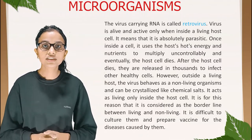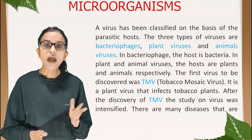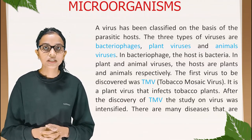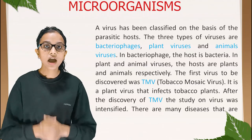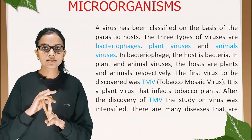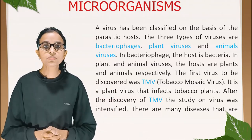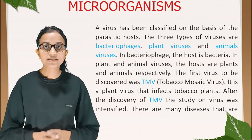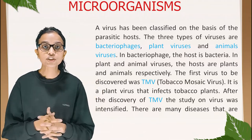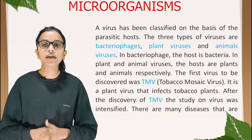It is difficult to culture viruses and prepare vaccines for diseases caused by them. Viruses have been classified on the basis of their parasitic hosts into three types: bacteriophages, plant viruses, and animal viruses. In bacteriophage, the host is bacteria; in plant and animal viruses, the hosts are plants and animals respectively. The first virus to be discovered was TMV — tobacco mosaic virus — a plant virus that infects tobacco plants.